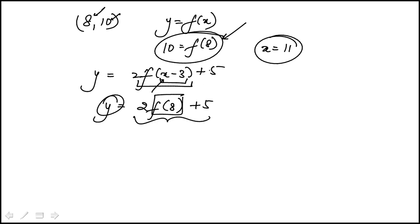Now I do know what f of 8 is, that's 10. So if I replace that, I get 25. So that means when x is 11, the value of y is 25. That means this point must fall on the graph of that function, which is choice D.